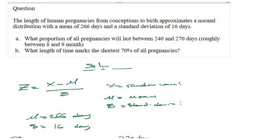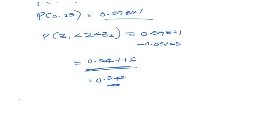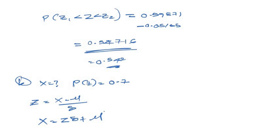Now let's solve part B — what length of time marks the shortest 70 percent of all pregnancies? This is actually giving you the probability and asking you to find x. The probability equals 70%, which is 0.7. We use the z-table to find z, and since z equals (x minus mu) over sigma, rearranging gives x equals z times sigma plus mu.